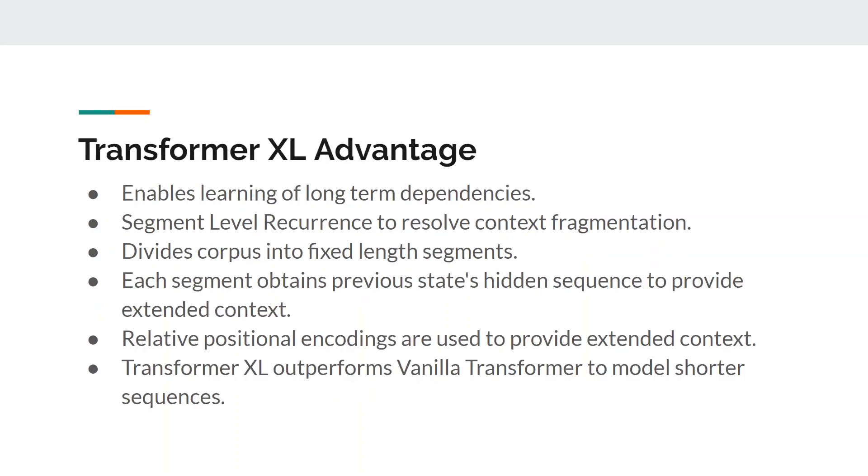Language model training in previous works is performed on separated fixed-length segments of a few hundred tokens without any information flow across segments. As a result, the model cannot capture any long-term dependencies beyond the predefined context length. This is known as context fragmentation. Transformer Excel enables learning of long-term dependencies and resolves the problem of context fragmentation through segment-level recurrence mechanism.